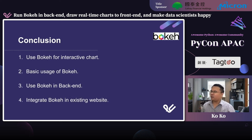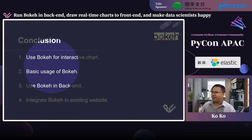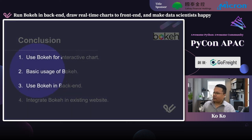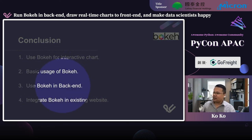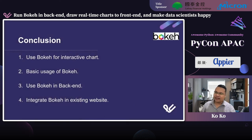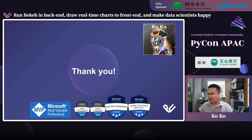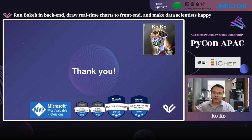Let's go to conclusion. What did we learn today? First, we use Bokeh for interactive charts — zoom in, zoom out, draw, and save. We learned the basic usage of Bokeh. We learned how to use Bokeh in backend. And the last one is we learned how to integrate Bokeh into an existing website and some security strategies. Thank you everyone. My name is Coco, I am Microsoft AI MVP in Taiwan since 2020. If you're interested in connecting with me, you can find me on LinkedIn. Thank you, goodbye!